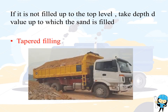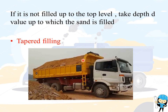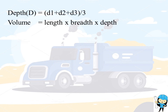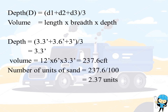The second condition is tapered folding, which is the most common condition — this is the way sand is typically filled in a truck. Here also, depth will be varying. We take the average of 3 depths: the first depth at one edge of the truck, the second at the mid, and the third at the other edge. Depth equals D1 plus D2 plus D3 divided by 3. The depth values are 3.3 feet, 3.6 feet, and 3 feet divided by 3, giving an average of 3.3 feet. Therefore, volume equals 12 feet into 6 feet into 3.3 feet, which equals 237.6 cubic feet. The number of units of sand is 237.6 divided by 100, that is 2.37 units of sand.